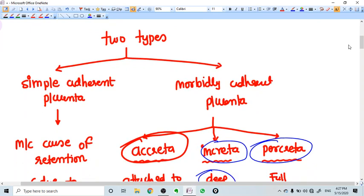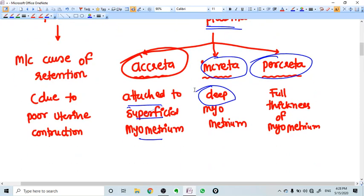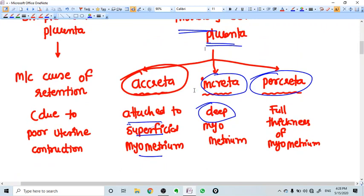Second one is morbidly adherent placenta. In this kind of placentas, the placenta is really attached to the myometrium and it is morbidly attached. Whenever you try to remove the placenta, you are actually encroaching the wall of the uterus, and it would lead to a very dangerous postpartum hemorrhage.